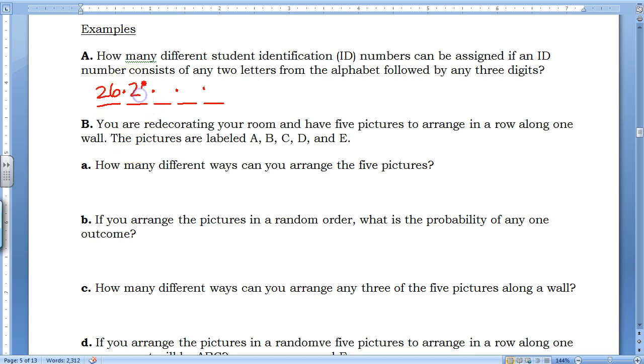So the first blank says it could be any letter from the alphabet. I know that there are 26 possibilities, because there are 26 letters in the alphabet. Another letter, so another 26. And then it says any three digits, so counting the numbers zero through nine, there are ten digits. And if I multiply together all the possibilities for each of those blanks, there will be 676,000 possible ID numbers.